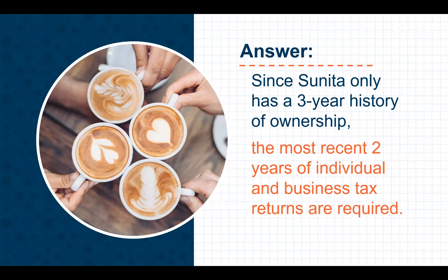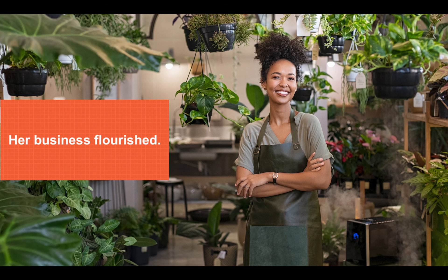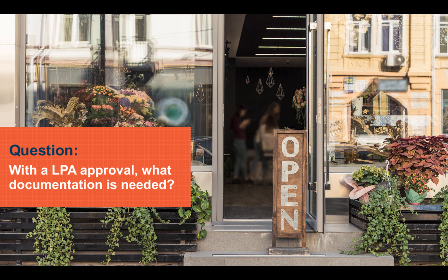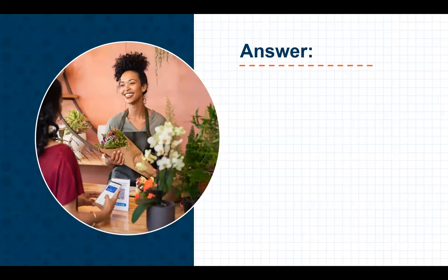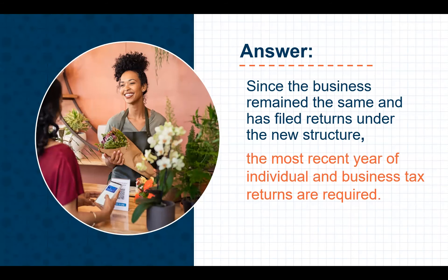Let's take a look at a second scenario involving a business that restructured. Six years ago, Alexa opened her florist shop as a sole proprietor. Her business flourished. Two years ago, she restructured the business and took on a partner, and since that time she has reported her income to the IRS using partnership returns. With a Loan Product Advisor approval, since the business remained the same prior to and after the restructuring from a sole proprietorship to a partnership, and the business has filed at least one year of tax returns after the new entity was formed, only the most recent year of individual and business tax returns are required.